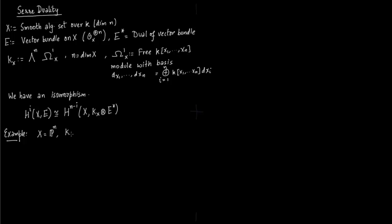So say x is Pn. Then kPn is isomorphic to O(-n-1). This we have shown before. Say e is O(d), then e star would be O(-d). So these are line bundles we have talked about before, the line bundle and its dual.